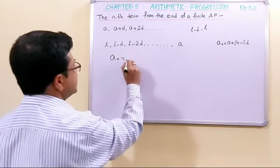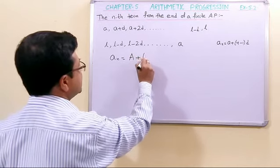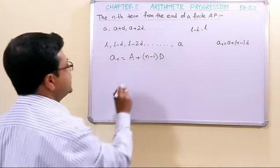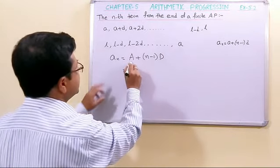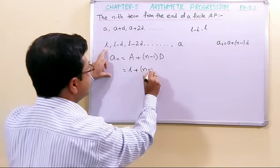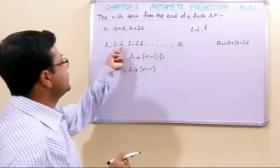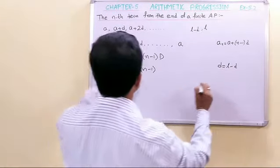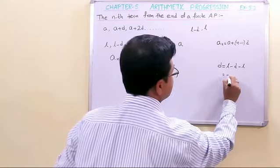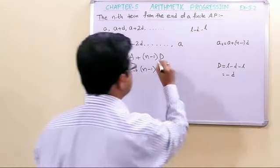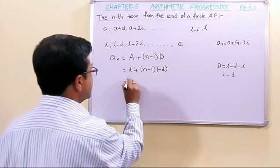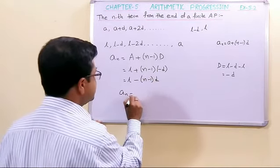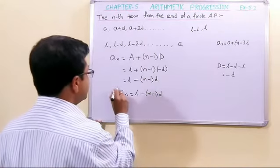We know aₙ = a + (n-1)d. Now from the reversed end, the first term is l. The common difference is the second term minus the first term: (l - d) minus l = -d. So the common difference becomes -d. Therefore, the nth term from the end is: l + (n-1)×(-d), which gives l - (n-1)d. Use this formula whenever you need to find the nth term from the end.